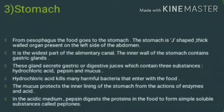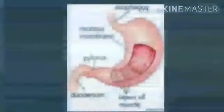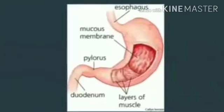The stomach is the widest part of the alimentary canal. The inner wall contains gastric glands, which secrete gastric or digestive juices containing three substances: hydrochloric acid (HCl), pepsin, and mucus. Hydrochloric acid kills germs in the food. The mucus protects the inner lining of the stomach from the action of enzymes and acid. This is the diagram showing the esophagus, mucus membrane, muscle layer, pylorus, and duodenum as parts of the stomach.